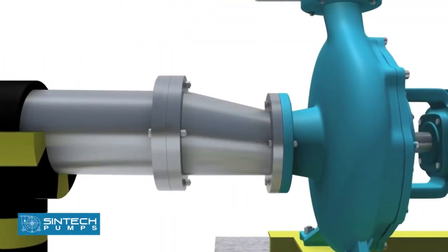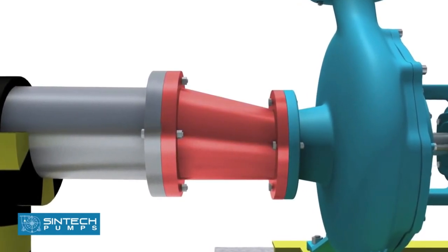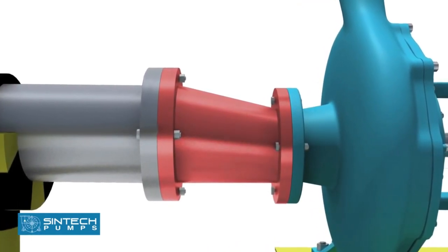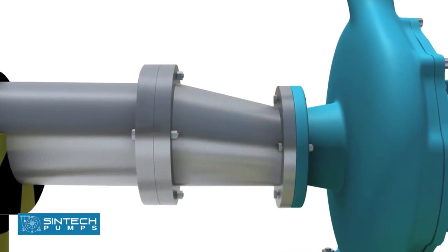The reducer joining the straight length of the pipe in the pump line should be an eccentric reducer with the inclined side of the reducer as the top side.